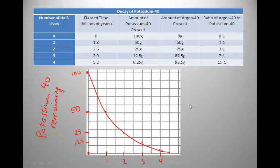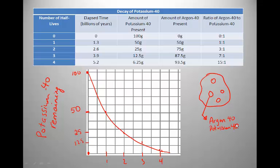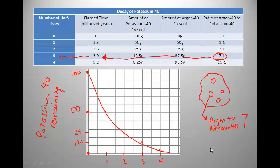A geologist picks up a rock with air pockets, takes it to the lab, and uses special equipment to determine a ratio of argon-40 to potassium-40 — seven times the amount of argon for every unit of potassium-40. That tells him that three half-lives have elapsed, which would be the equivalent of 3.9 billion years. Knowing this information and having a half-life curve allows you to work backwards.